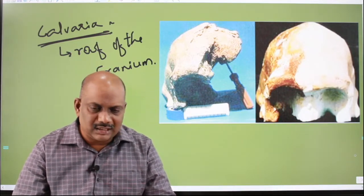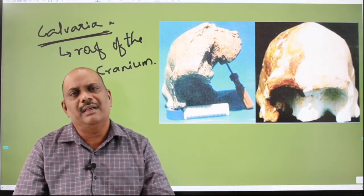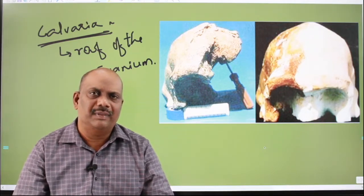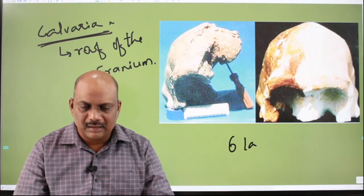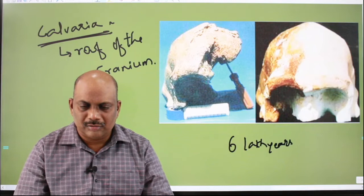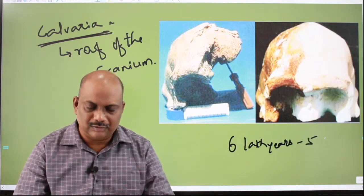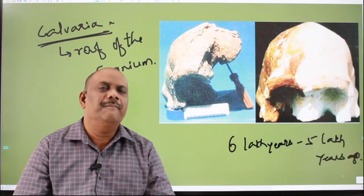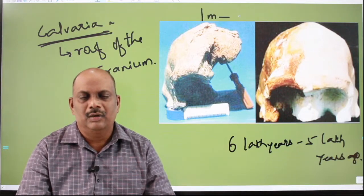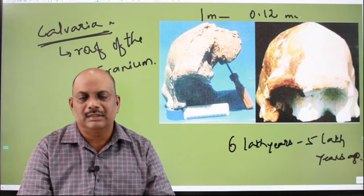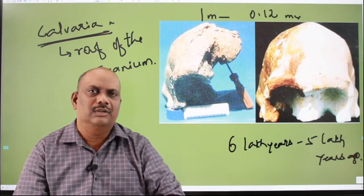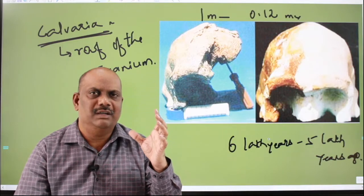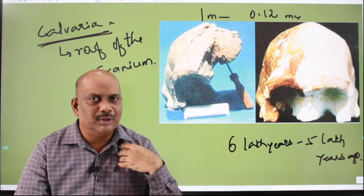Then the geological survey of India, they did an elaborate dating and they managed to find or establish the period during which this man survived. He lived roughly between 6 lakh years to 5 lakh years ago. We know that Homo erectus lived between 1 million to 0.12 million years. Somewhere in the middle of the Homo erectus, you can place comfortably.